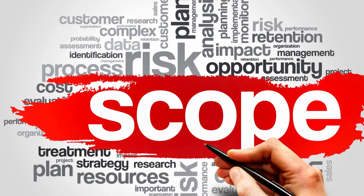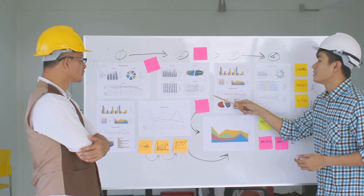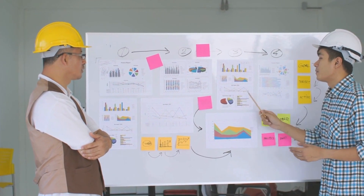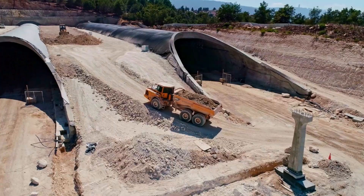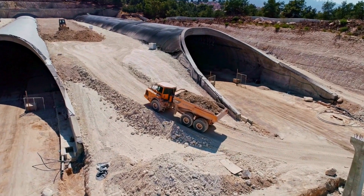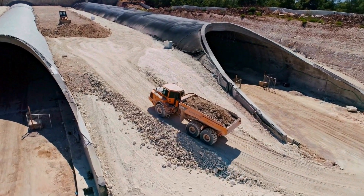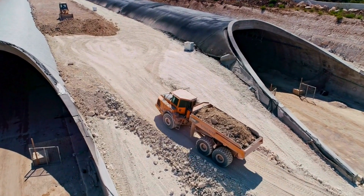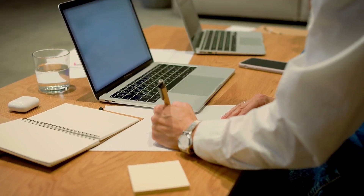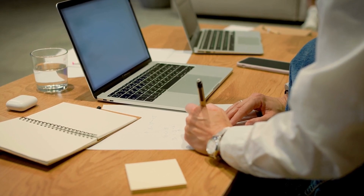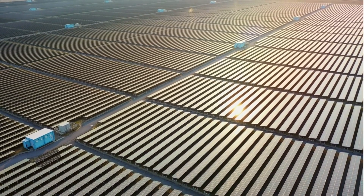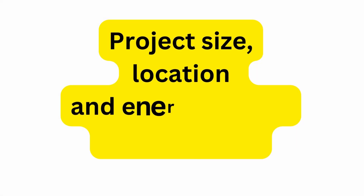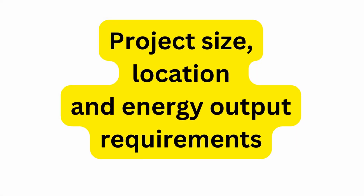First up, we have project scope and requirements. This is where we outline exactly what needs to be done and what resources we'll need. Understanding the project scope is like setting the boundaries for our journey. For example, when building a bridge, you need to thoroughly understand the project scope — going through the project charter, understanding client needs, and identifying constraints. Similarly, in a utility-scale solar project, we define scope by considering factors like project size, location, and energy output requirements.